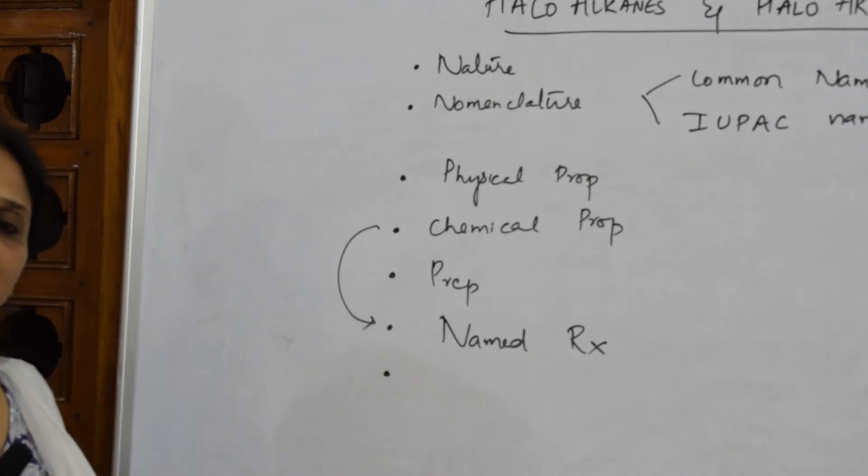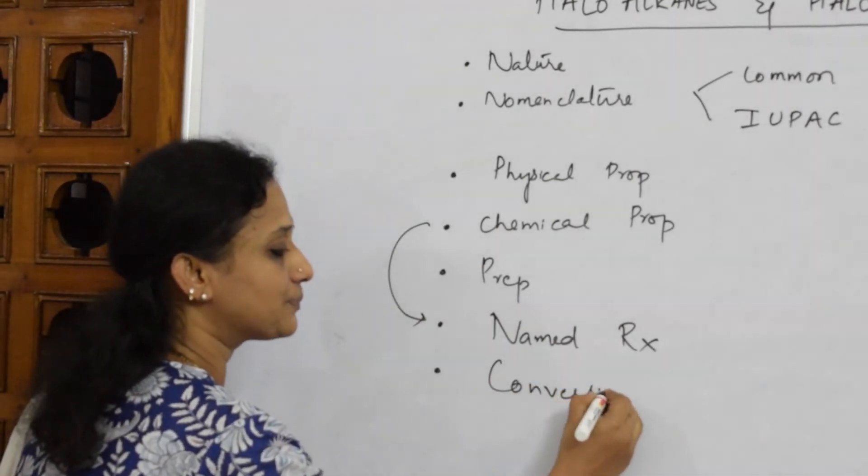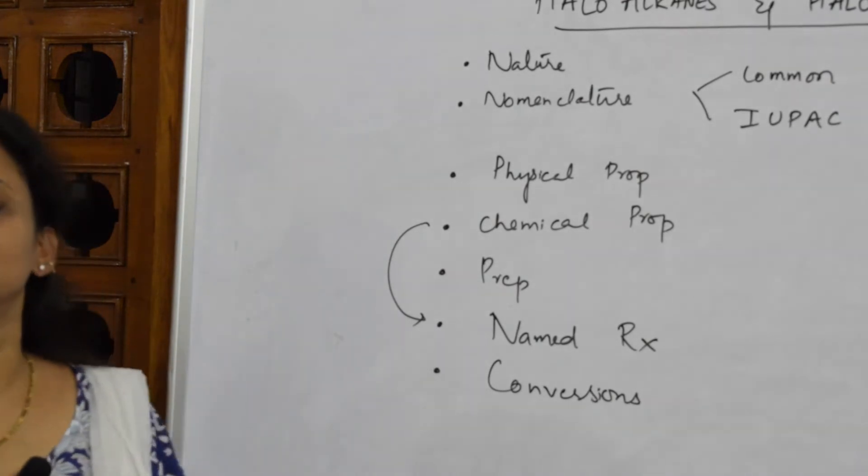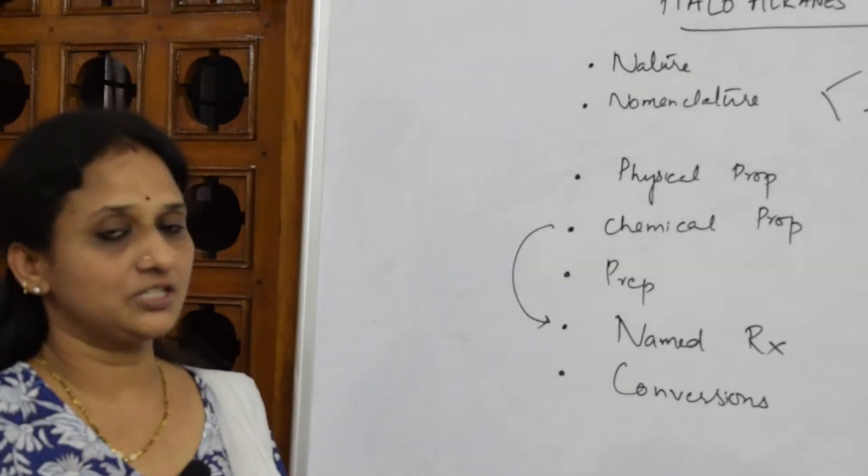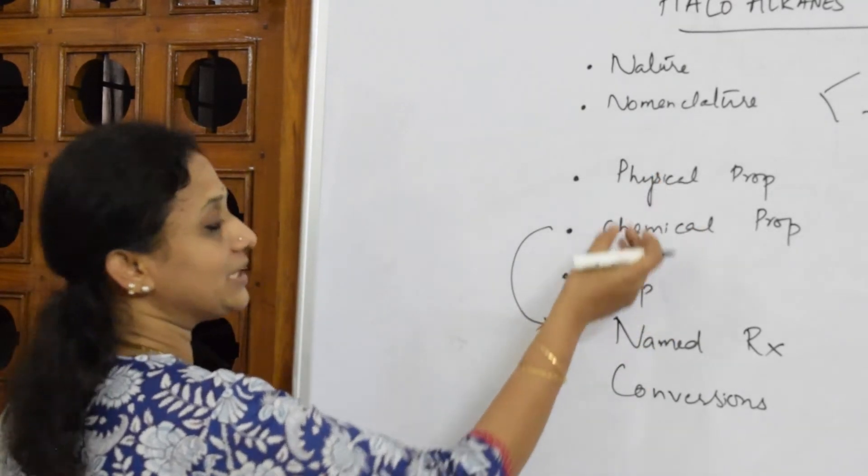Every chapter has 15 to 20 conversions which are very clear along with reagents. After learning the preparations, physical properties, chemical properties, and name reactions...